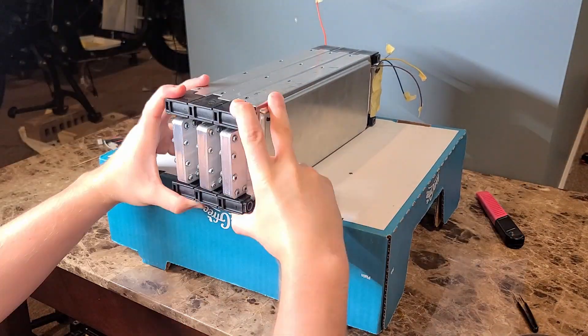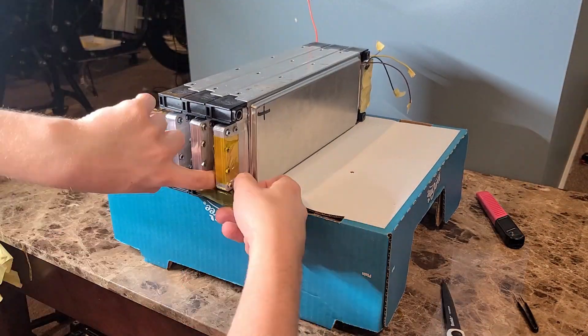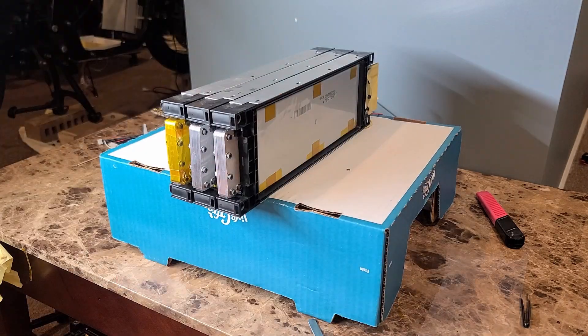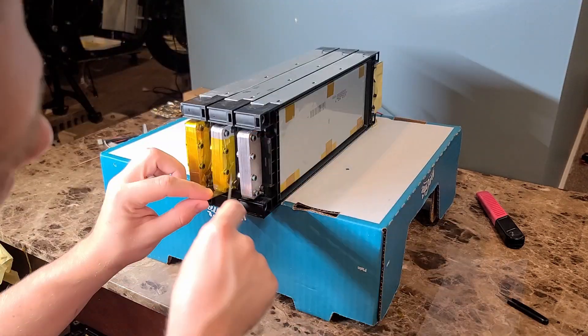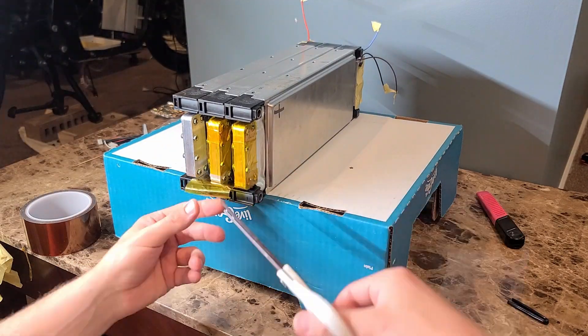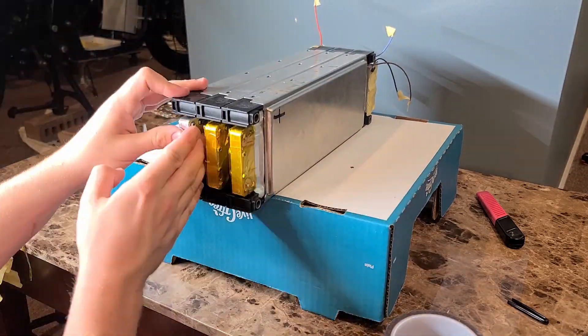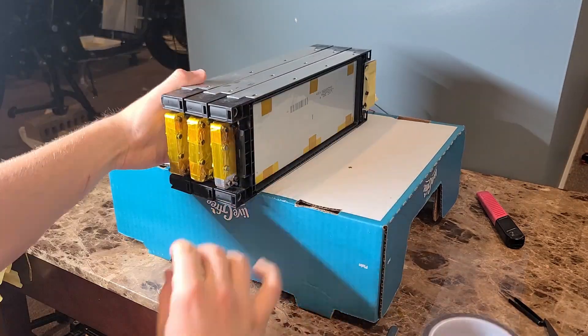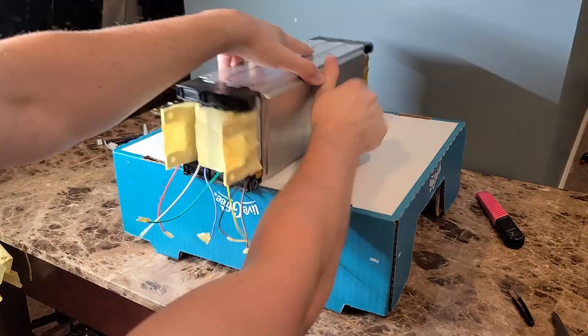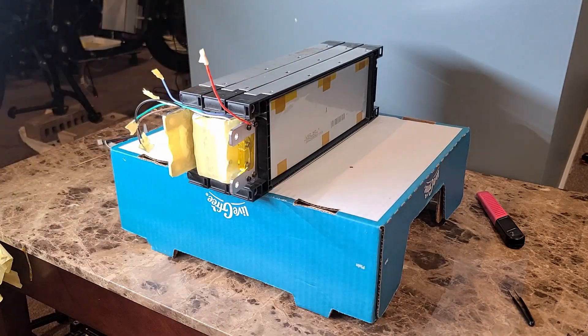So my next step was to use Kapton Tape to tape over all these terminal plates so that they wouldn't touch or make even bigger sparks because Kapton Tape is pretty much an ESD tape that protects and insulates electrical components such as this battery.